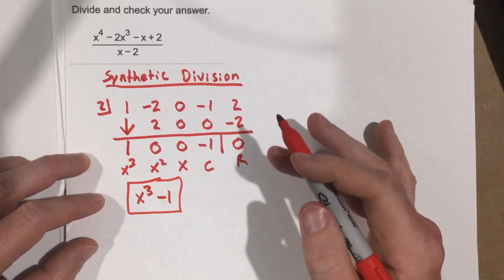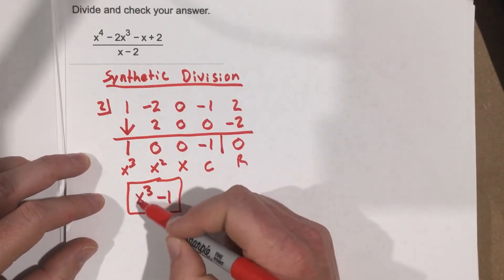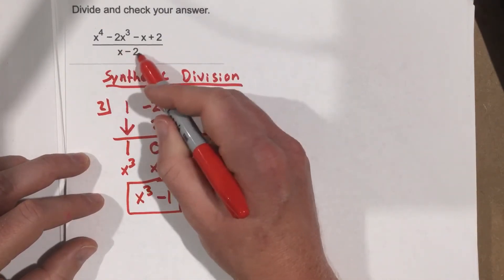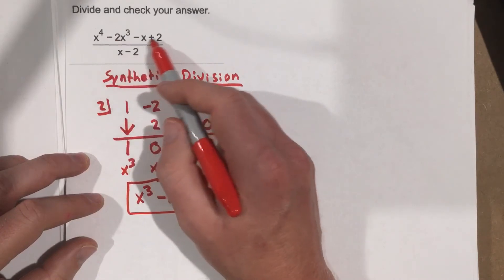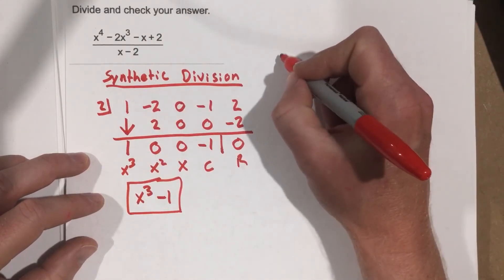The best way to check your answer is to take what you got for your solution and multiply it by what you divided by, x minus 2. If you end up with what you started with, you did it correctly. So let's do this checking part.